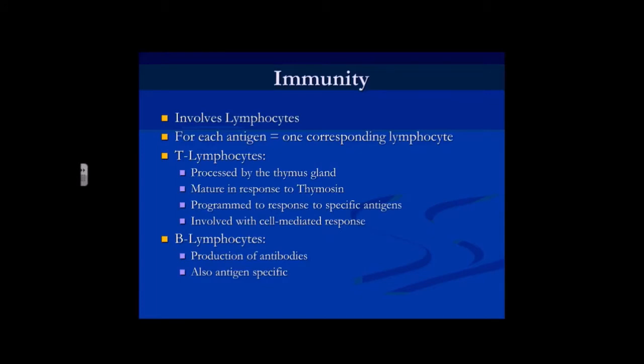Immunity is all about lymphocytes — T and B lymphocytes. For each antigen there is a corresponding lymphocyte, once the body has been sensitised to it. T lymphocytes are programmed to respond to specific antigens and are involved with what's called the cell-mediated response. B lymphocytes are there to produce antibodies, which are also antigen specific, and which will help us in future encounters with that disease or antigen.